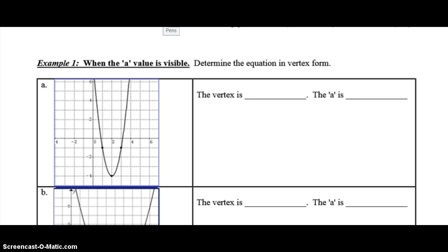So let's start with your first example. Just write it again here. The equation is y equals a bracket x minus h squared plus k. So the very first thing you want to do is to figure out your vertex. So the vertex is right here at 2, negative 4.